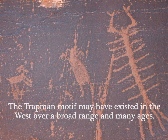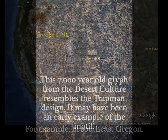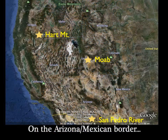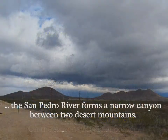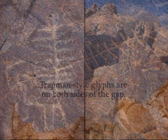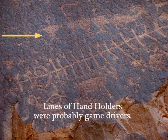The Trap Man motif may have existed in the West over a broad range well before the Basketmakers. A 7,000-year-old glyph from Heart Mountain, Oregon, from the desert culture resembles the Trap Man design. Down on the Arizona-Mexican border, the San Pedro River forms a narrow canyon between two desert mountains, and there are petroglyphs on both sides including Trap Man style glyphs. This picture from Moab shows the cross-hatched lines, and above them are hand holders — probably game drivers, part of the hunting action.